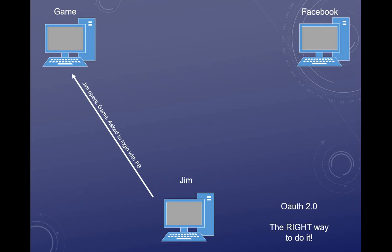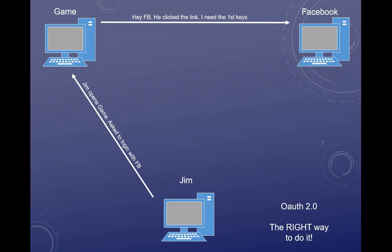So Jim, so he doesn't have to create a new account, just goes ahead and logs in with Facebook. Here's what happens: the game is going to do two things at the same time — it's going to send Jim a page where he can log into Facebook, and it's also going to query Facebook and say, 'Hey Facebook, he just clicked the link, I need a set of keys.' Facebook is going to respond back and say, 'Okay, we trust each other — here is the consumer key and a secret,' so they can verify each other. The game can verify Facebook, Facebook can verify the game.